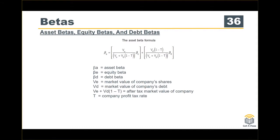You have the asset beta, equity beta, and debt beta in the formula. Don't forget — it gives you VE and VD. In general, we use the market value of the company's shares and the market value of the company's debt in the calculation. The total value of the company is VE plus VD, and because there is tax, you have some tax benefits from gearing.